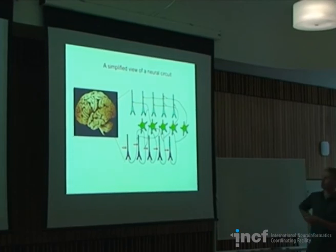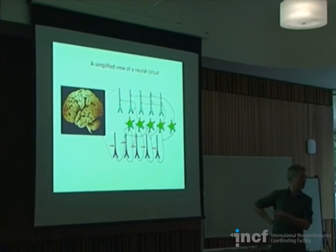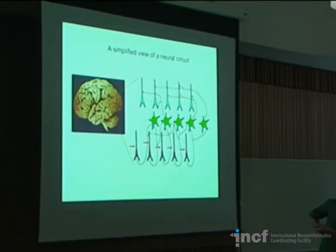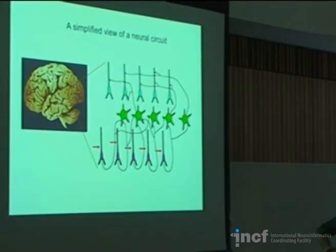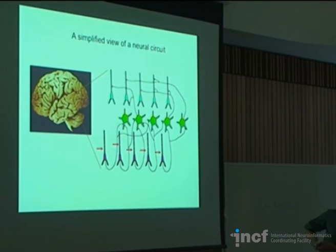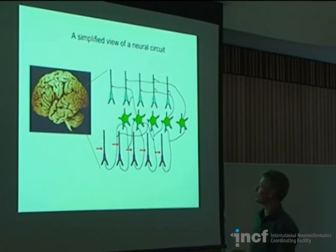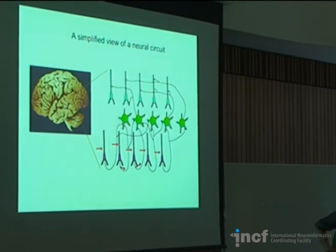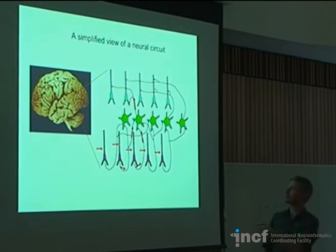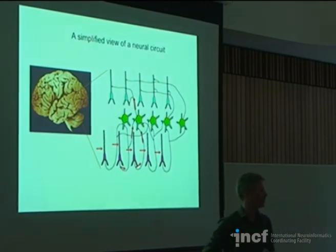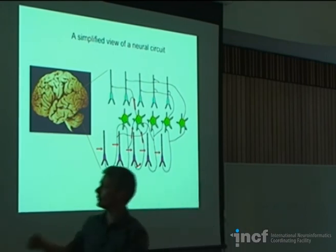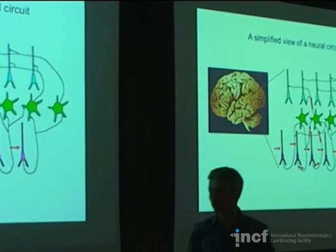In a very general sense, we might imagine that a neural circuit has some sort of representation of information. Neurons fire action potentials, which propagate down axons, they release neurotransmitter, and then a downstream neuron might fire an action potential, which would propagate again to the next stage in a circuit. We want to start to think more about this process of information propagating through circuits.